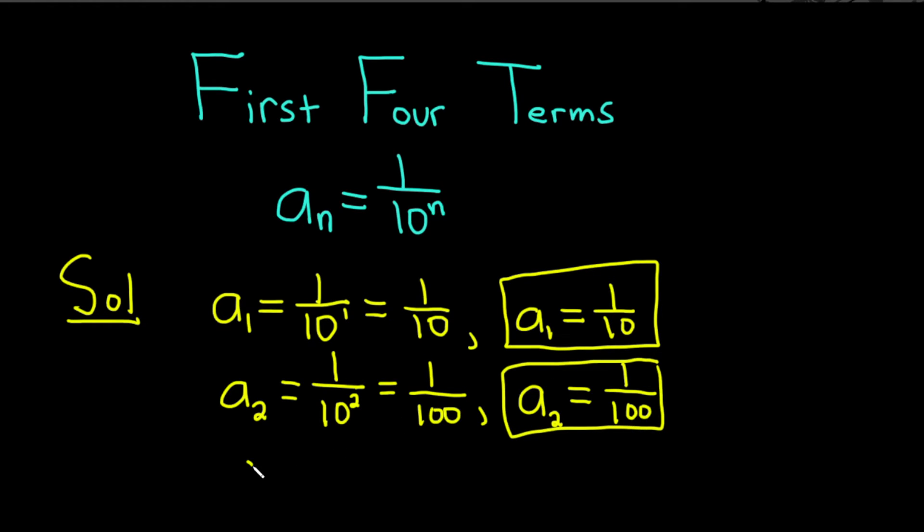Let's find the third term. So a sub three would be equal to one over ten cubed. So ten cubed is a thousand, so this is one over a thousand. And so the third term would be one over a thousand.